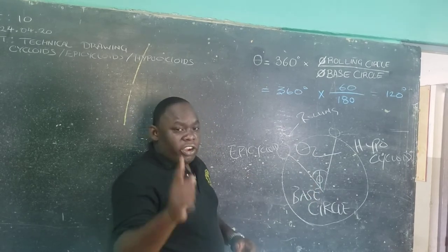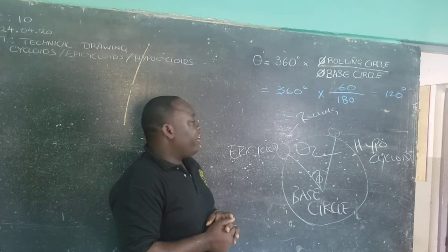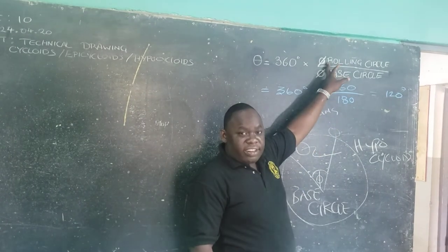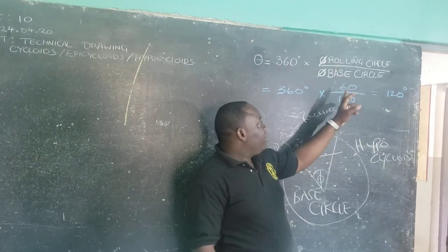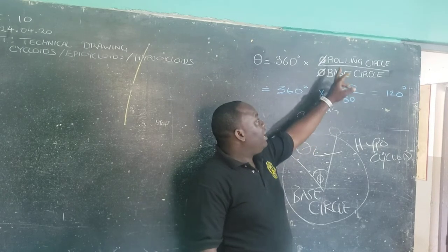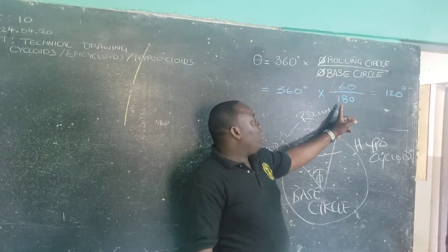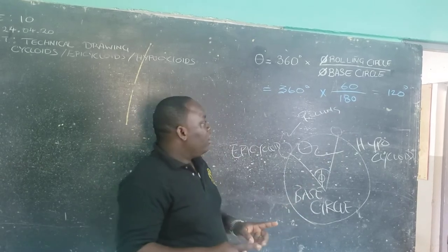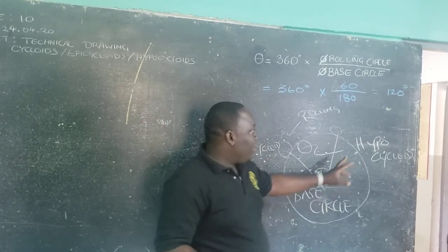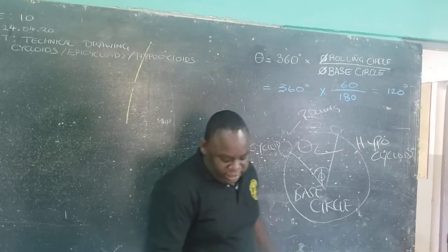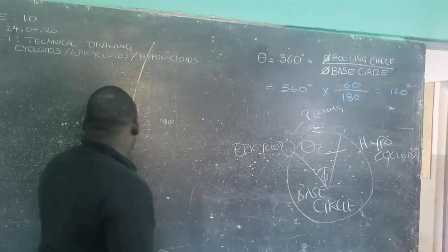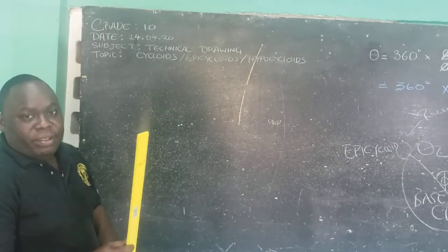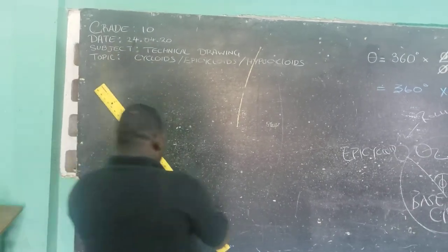For your drawing examples, I would like you to use a rolling circle diameter of 60 millimeters and a base circle diameter of 180 millimeters. Of course, your span will be 120 degrees. Now we would like to set up the conditions for the epicycloid.